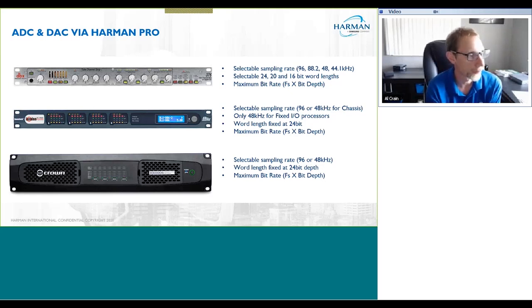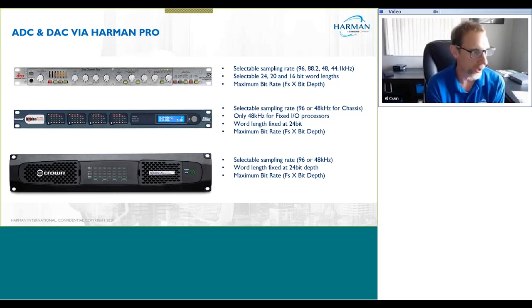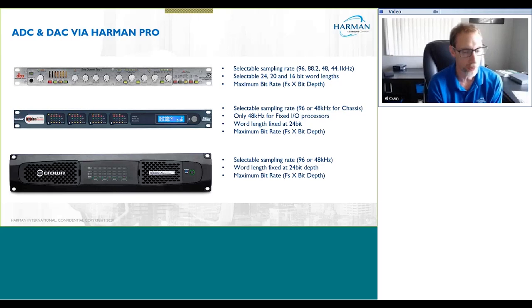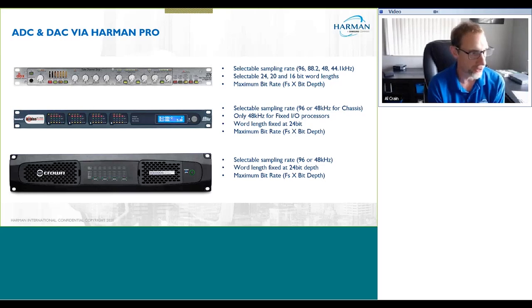The next question asks: what is the sampling frequency and bit depth on Harman BLU link audio? On BLU link you can actually send audio at either 48 kHz or 96 kHz. Only the BSS 800 series modular devices support 96 kHz sampling. If you're using a BLU-100, BLU-101, or BLU-102, those devices only support 48 kHz sampling. The bit depth is always fixed at 24 bits on BLU link, regardless of which product it comes from. The sample frequency can be set to either 48 kHz or 96 kHz depending on the device.